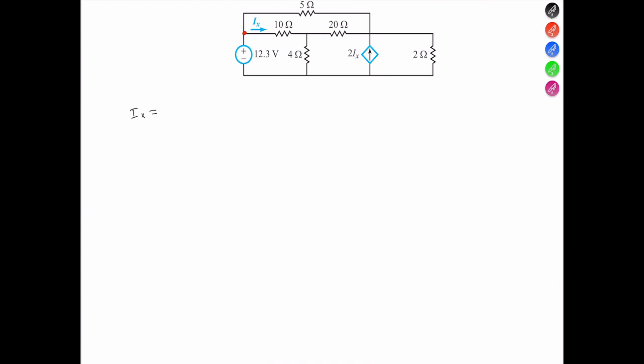So the current Ix is the difference in voltage across the 10 ohms divided by that 10 ohms.